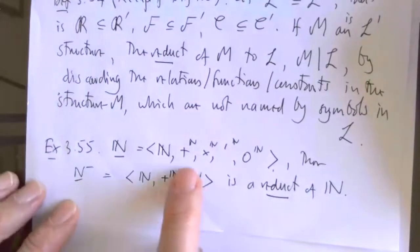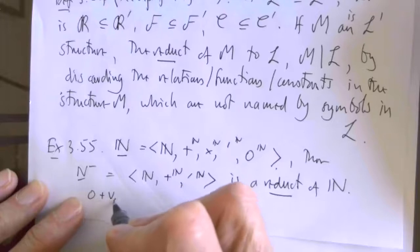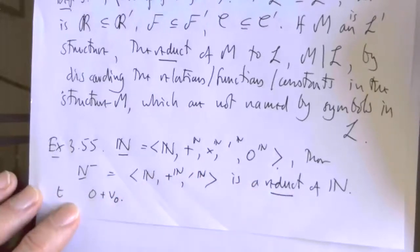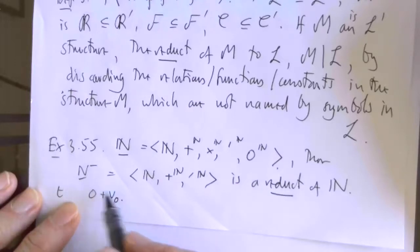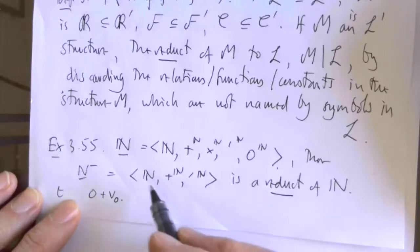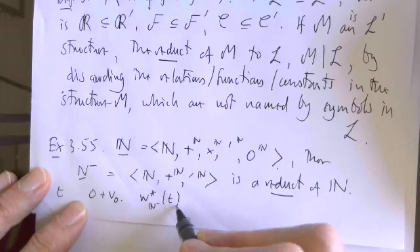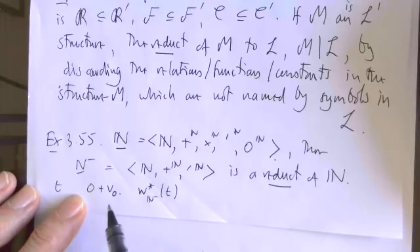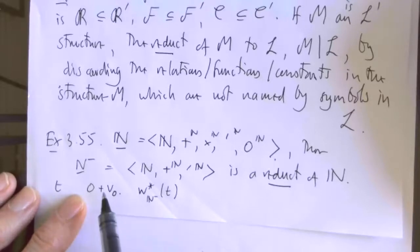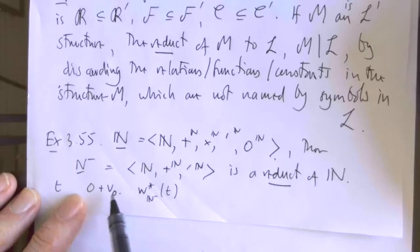To go back to example 3.55, I could have a term here, let's call it 0 plus v0. Here's my term t. t is a term in the language appropriate for N minus, after all it only mentions plus. Now if I've got any particular assignment, if I look at the interpretation here of this term t, it's going to be whatever the assignment function w assigns to v0, say 126. So this is going to work out as 0 plus 126.